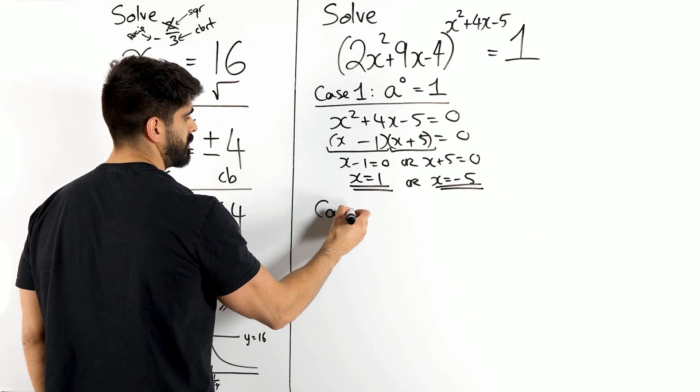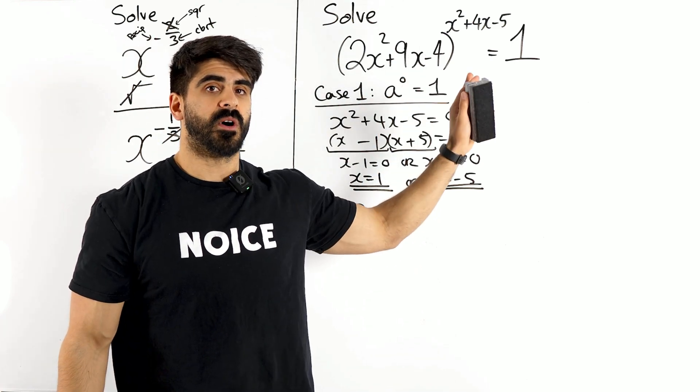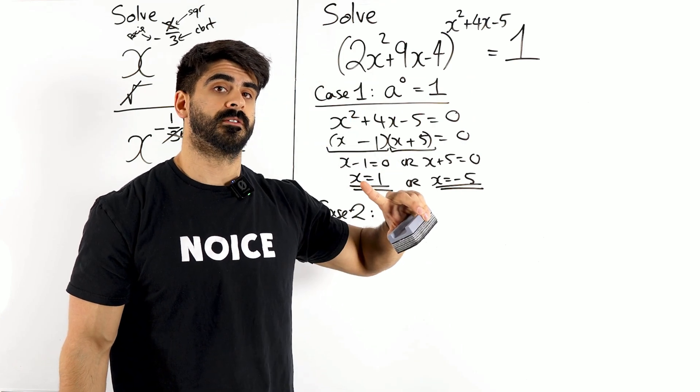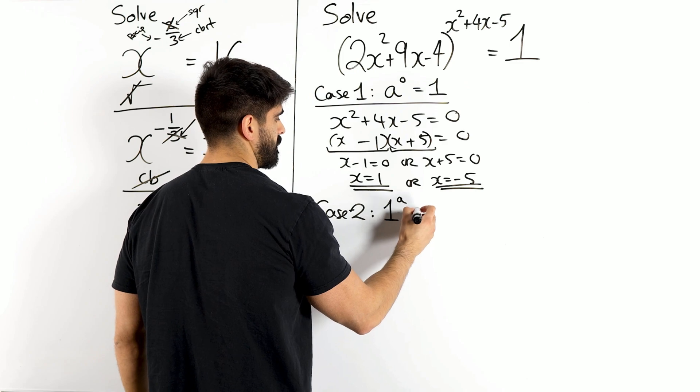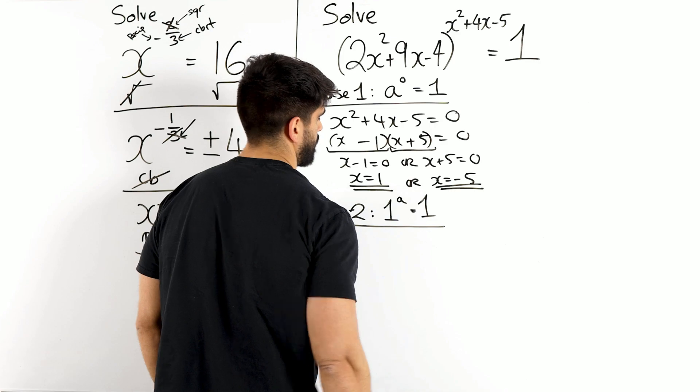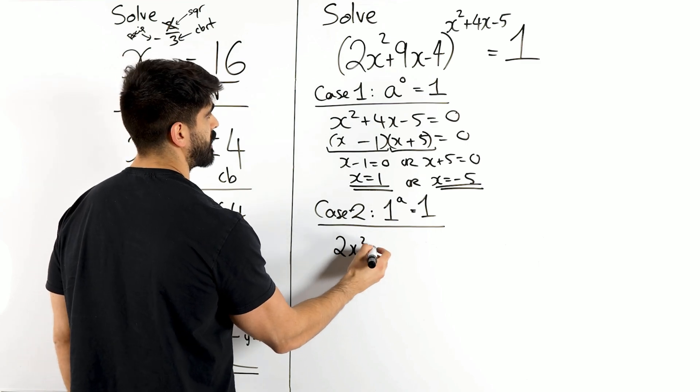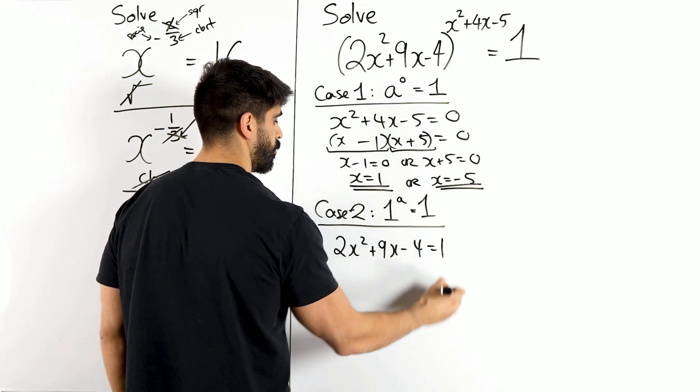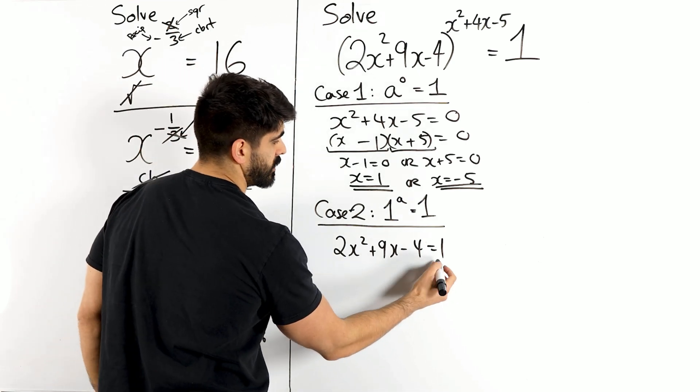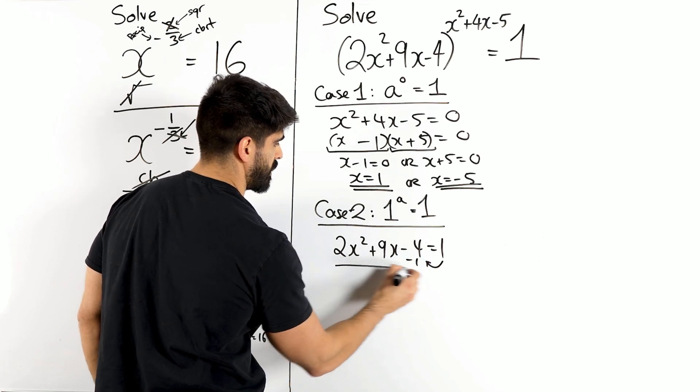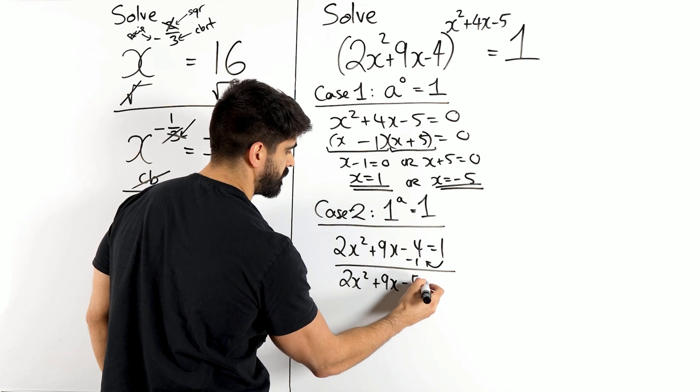Now what's the second case? There's actually another one. Case two. Here I said anything to the power of zero is one. But the other way we could have thought of it is one to the power of anything is one. One to the power of anything is one. Meaning, as long as the base number is one, we're all good. So if I set the denominator, 2x² + 9x - 4, to equal one, and rearrange, we could find the x values that fix it. So here that plus one, let's move it to the other side by subtracting one. So we are left with 2x² + 9x - 4 - 1 is - 5, is zero.